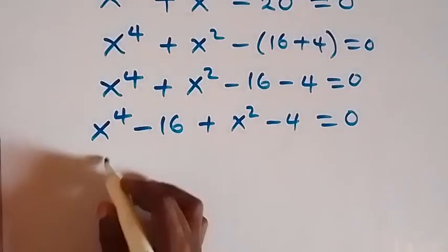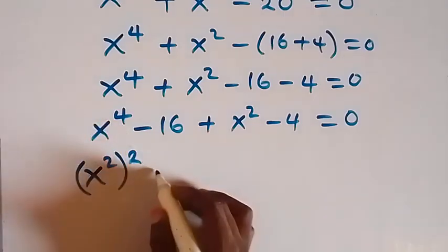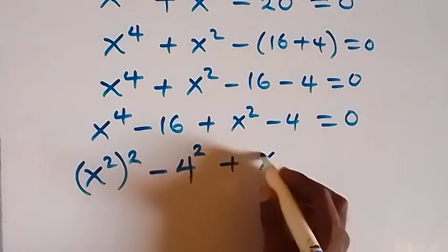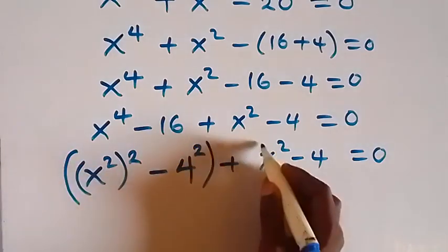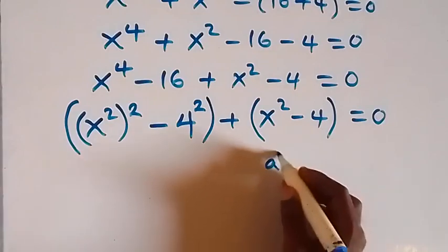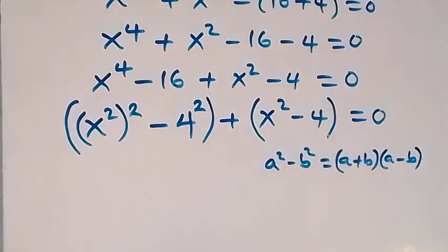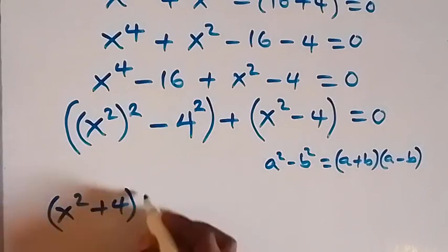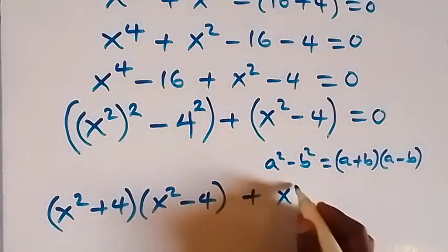From here, we can write this as x square raised to the power 2, since this power multiplied gives x raised to the power 4. Then minus 16 can be written as 4 squared, that's 4 times 4. Then plus x square minus 4 equals to 0. Grouping these together, the first bracket follows from the difference of two squares: a square minus b square is the same as a plus b times a minus b. So we have x square plus 4 times x square minus 4, then plus x square minus 4 equals to 0.